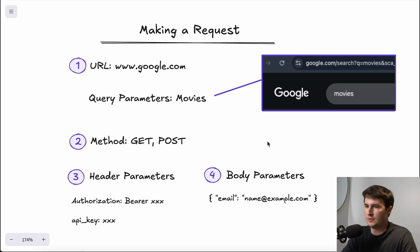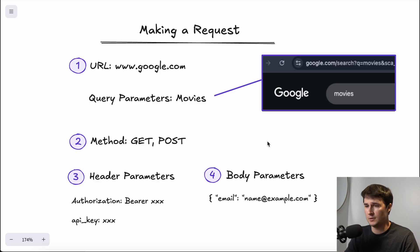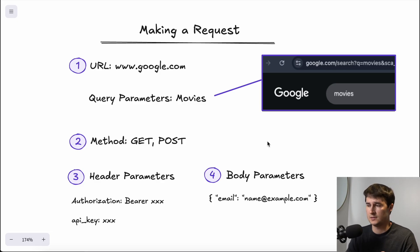The third component is header parameters. Some APIs require custom headers for tracking, versioning, and other purposes. Common uses include authentication — sending API keys or tokens — such as 'Authorization: Bearer {token}', and content type indicating the format of the data being sent, for example 'Content-Type: application/json'.